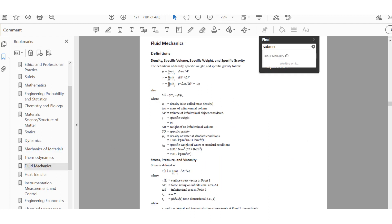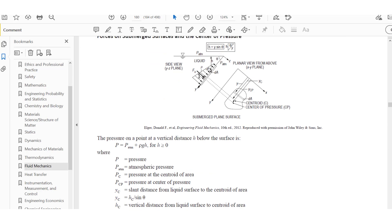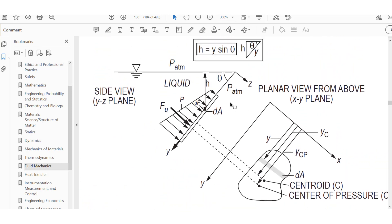We're in fluid mechanics, do Control-F, type 'submerged'. This figure is helpful because they tell us what each variable means. This is our y sub c - the distance from the free water surface to the centroid. Y sub cp is the distance to the center of pressure, the actual location where the force would act. When we want to determine moments, we need the actual location. Y is along this direction, always along the direction of the gate.